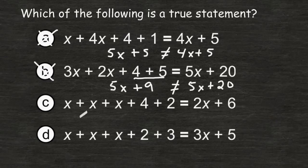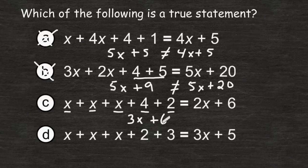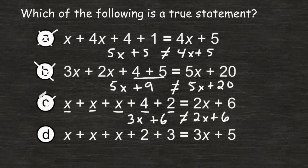Let's take a look at choice C. We can combine this x to this x and this x which is a total of 3x. And we can combine 4 and 2 which is a total of 6. And 3x plus 6 is not equal to 2x plus 6, thereby eliminating choice C as well.